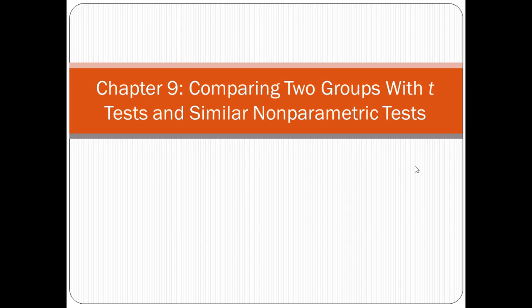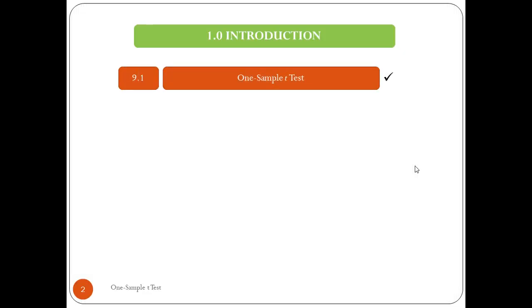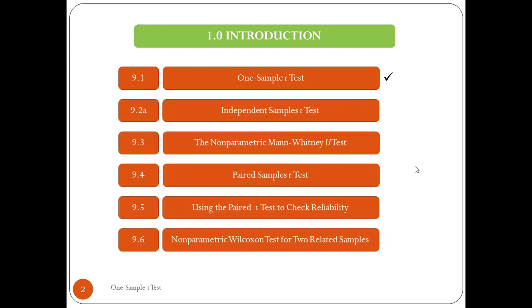Welcome ladies and gentlemen. As promised, in video 9.2 we're going to split it into 9.2a, 9.2b, etc., because this is a long lesson. We continue using t-tests to compare two groups. In the previous lesson 9.1b we already covered the one-sample t-test, so we continue to lesson 9.2a on the independent samples t-test. This test is very versatile and very powerful.